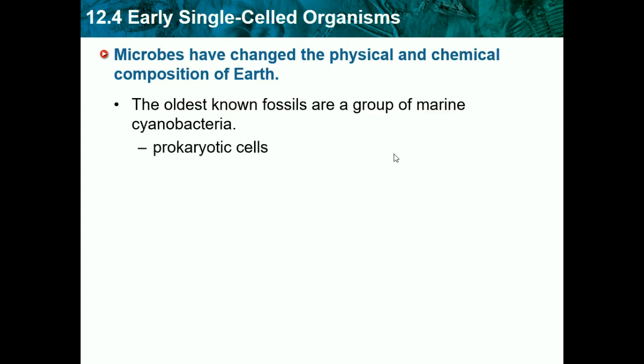They were prokaryotic. There are two types of single-celled organisms: prokaryotes and eukaryotes. Prokaryotes are even simpler — they don't have a membrane around their nucleus and they might have fewer organelles. Eukaryotes are what we have, and what most mammals have — cells that have nuclear membranes around their nucleus.